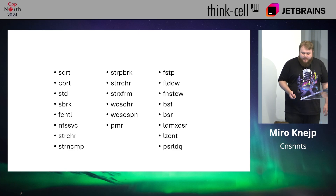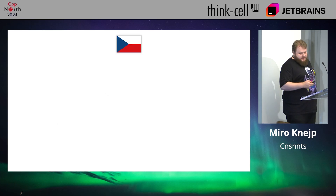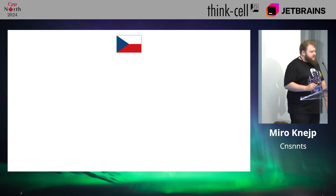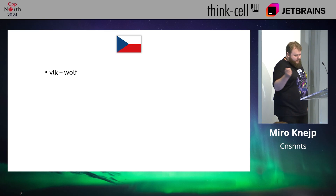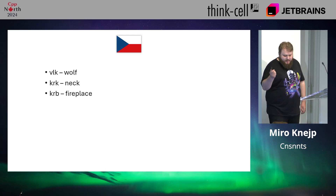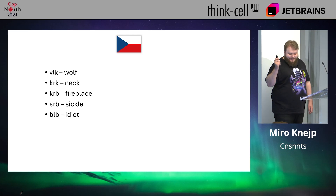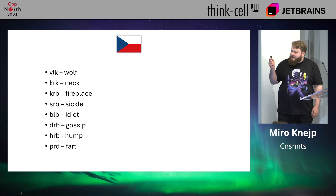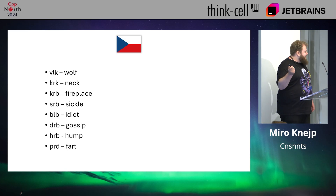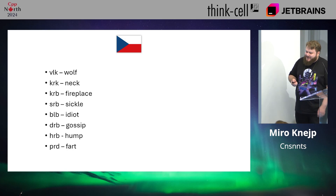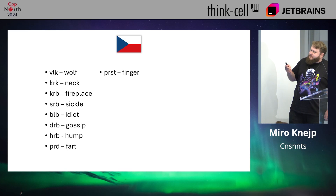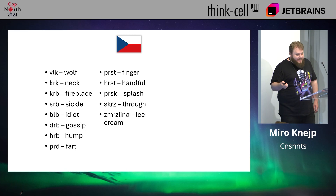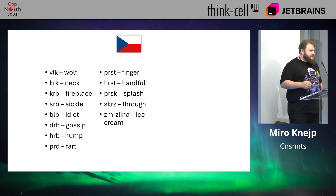But this is not a unique problem to programming. I speak the Czech language, and we also have this — there are a lot of words that don't have a lot of vowels. For example: vrok, krk, krp, srp, brp, drp, and hrp, and my favorite — prd, which I think is just the sound it makes. And we go to longer ones: prst, hrst, prsk, skrs, smrslina — we also have these consonant clusters in words.